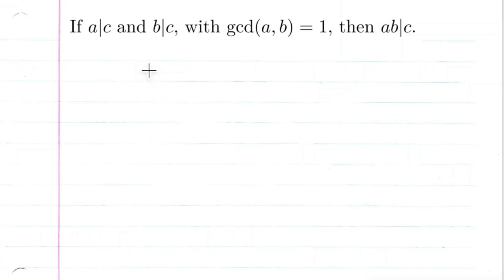Okay, so we're gonna prove an important theorem here. The theorem states that if A divides C and B divides C, with the GCD of A and B being equal to one, then A times B divides C.